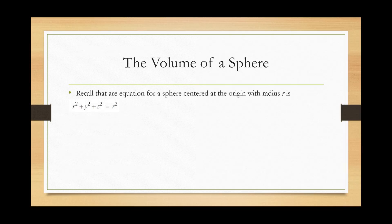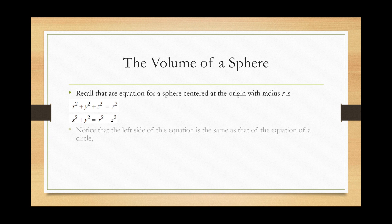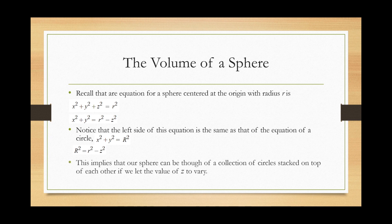Recall that the equation for a sphere centered at the origin with radius r is x² + y² + z² = r². Now observe what happens if we move the z² term to the other side of the equal sign. We get x² + y² = r² − z². Notice that the left side of this equation is quite similar to that of a circle, x² + y² = R², except here R² equals r² − z². This implies that we can think of our sphere as a collection of circles stacked on top of each other if we let the value of z vary.